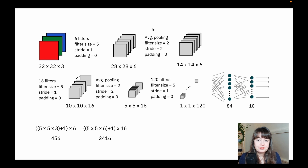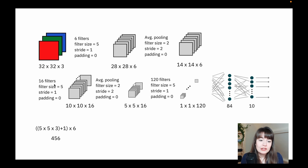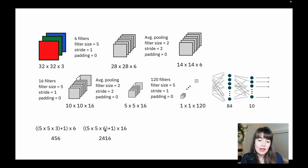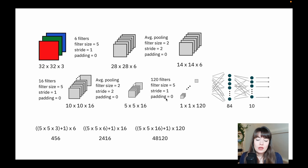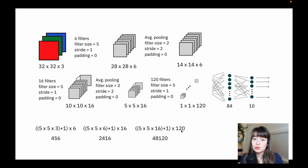For the next convolutional layer, we need a filter size of five by five values. Because we're applying it to a six-layered input, each filter will have six layers, and each filter also has a bias — plus one — and we have 16 filters. So that means this layer has 2,416 parameters. Again, the average pooling layer has no parameters. Lastly, on the final convolutional layer, we have five by five filters with 16 layers plus bias, and 120 filters. So at the end we have 48,120 parameters just for this one step.